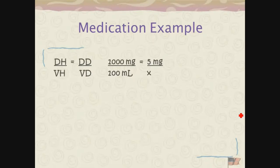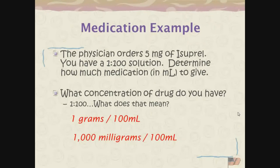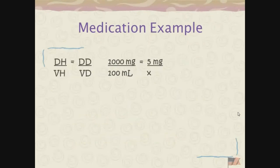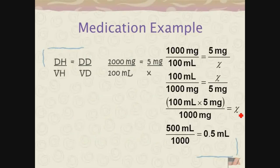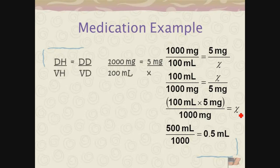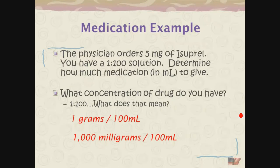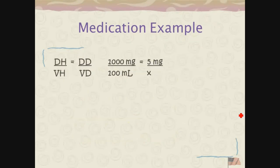I can go ahead and plug this into my weight-volume formula. 1,000 milligrams per 100 milliliters is what we have, and I want 5 milligrams because that's what the order is for. I set it up, cross-multiply, and I end up with half a milliliter as the amount I need to draw up to yield 5 milligrams of drug.